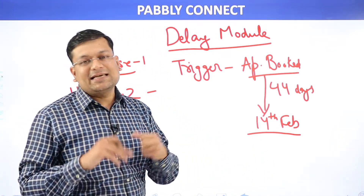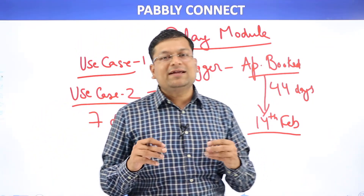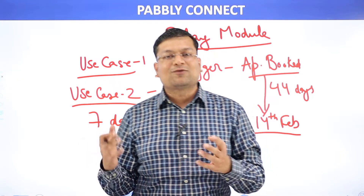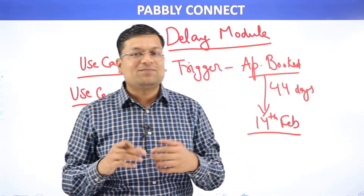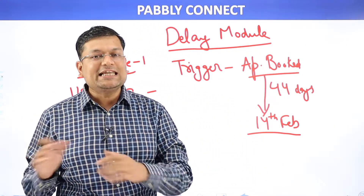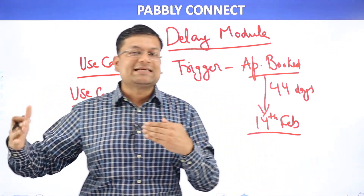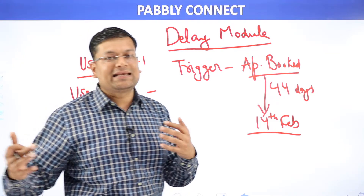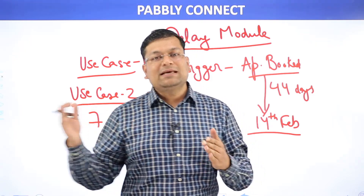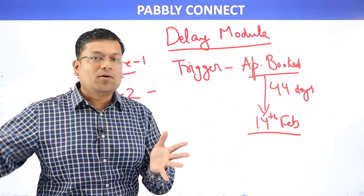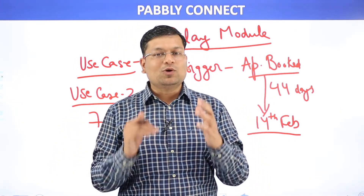The delay module is something quite rare — you won't find it in many software platforms. For example, Integromat only has a delay of five minutes, a sleep delay. Zapier has a maximum delay of 30 days. But Pably Connect will have a much wider delay where you can delay something for one month, two months, or an even longer extended period of time.